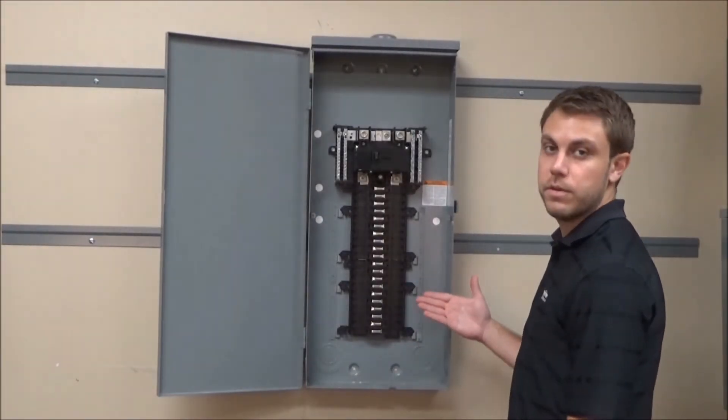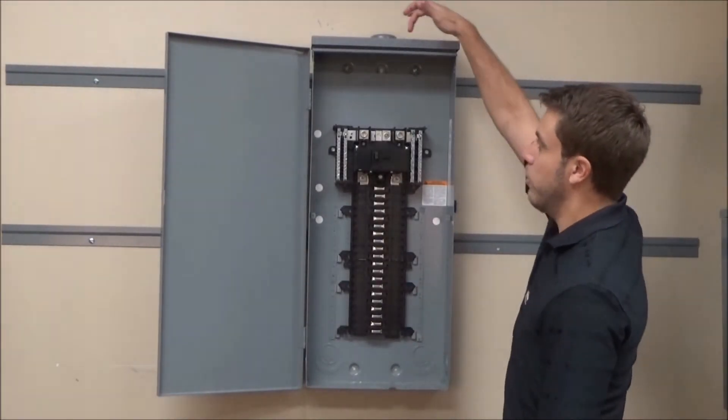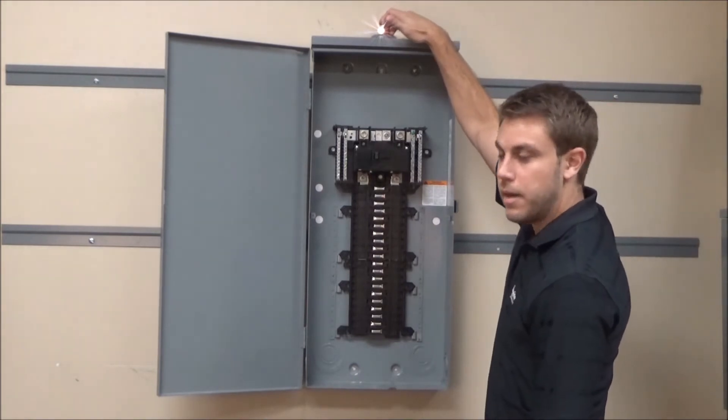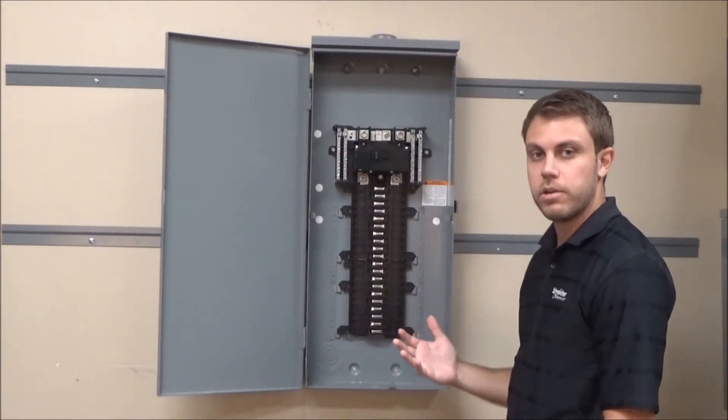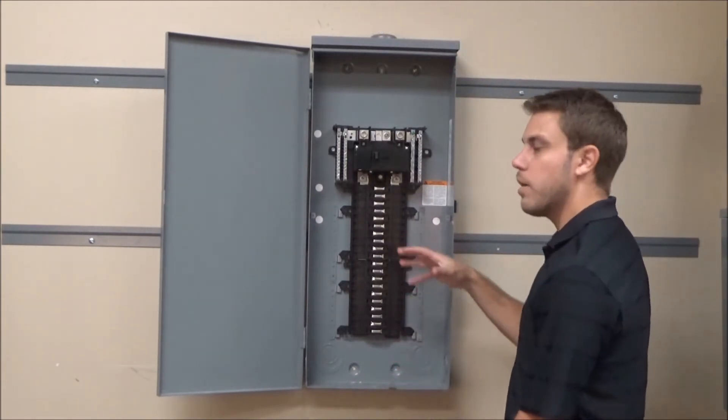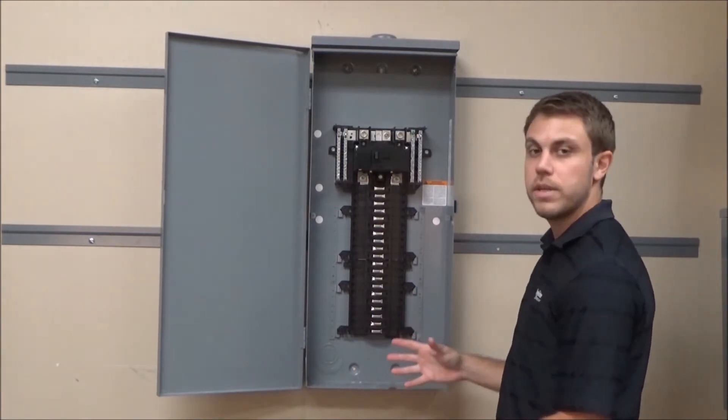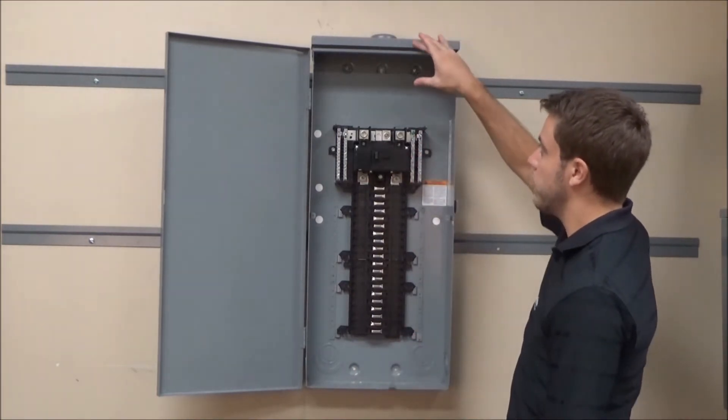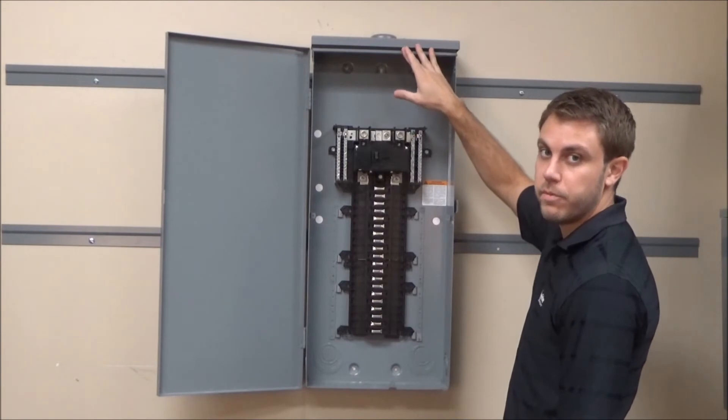With our NEMA 3R load center they're normally set up for overhead feed with the hub opening at the top, but if you do want to underground feed the load center, you do not rotate it like a normal NEMA 1 load center due to the NEMA 3R drip hood that's at the top to prevent water getting in.